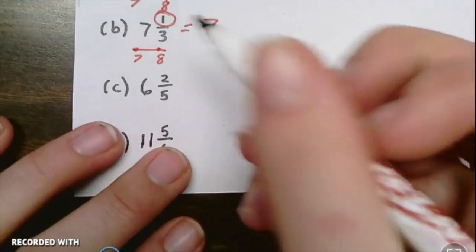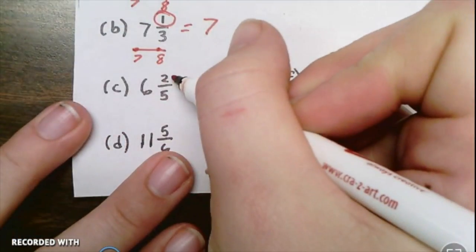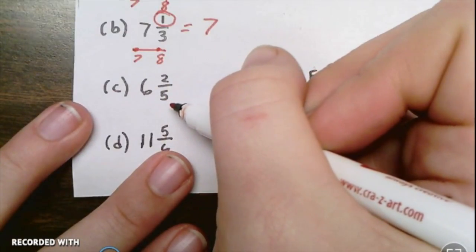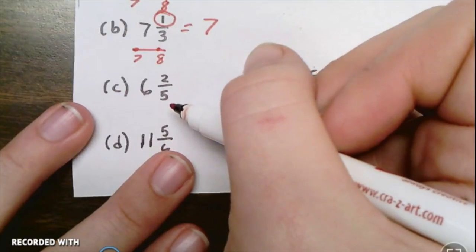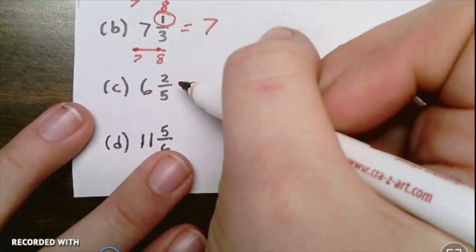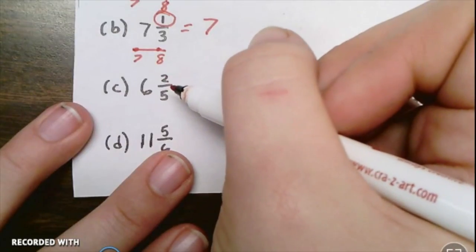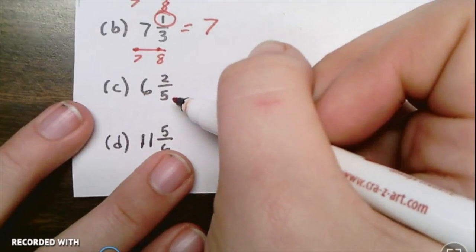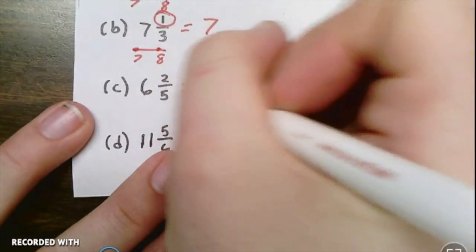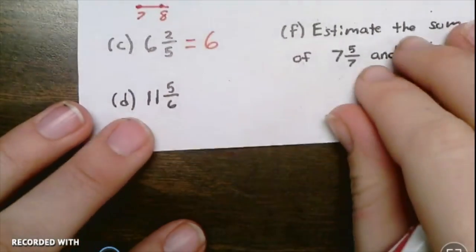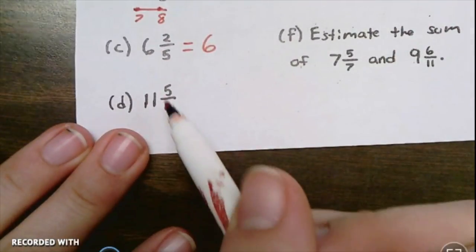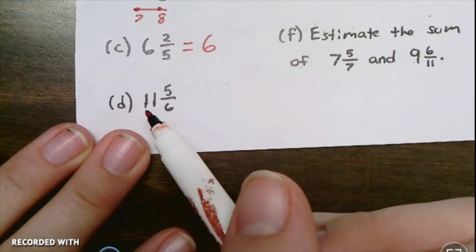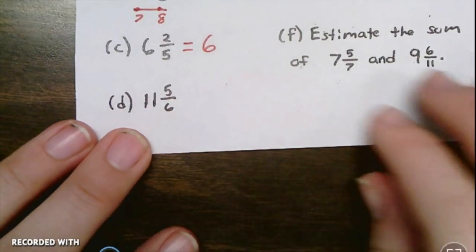C: six and two-fifths. Is two half of five or more than half? Well, what is half of five? Half of five is 2.5, so even though this has a two in it, just two is smaller than 2.5. So because it's not half of five, it's going to round down and this is going to stay at six. All right, do the last one on your own. Figure out if it's half of six, and then either round it down to 11 or up to 12.